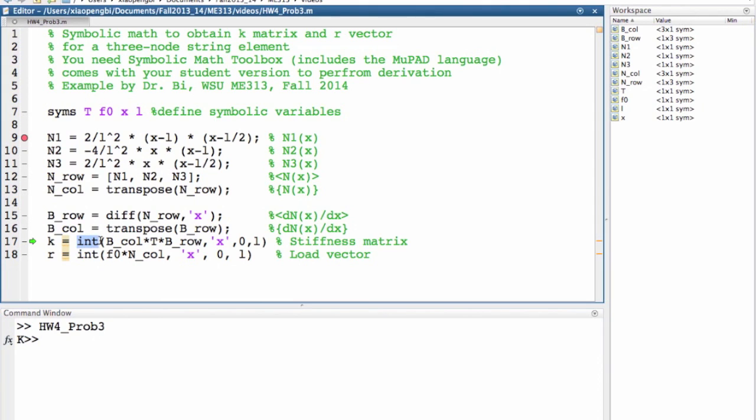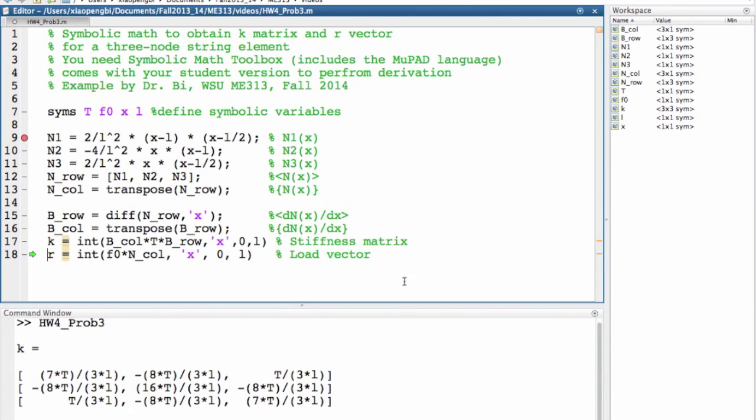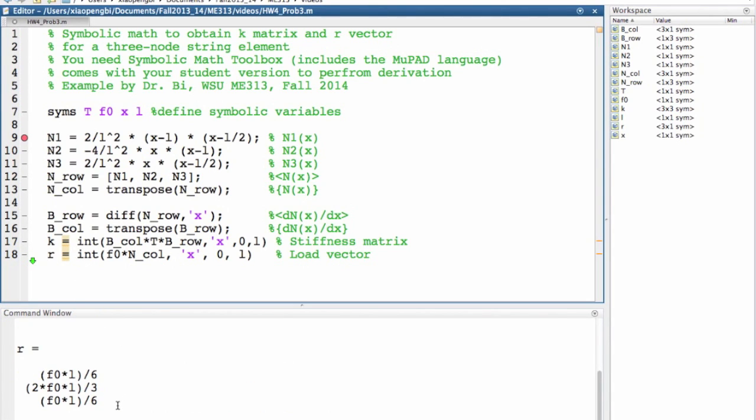Plug into equation number 1 and integrate from 0 to L to find local stiffness matrix K. Plug into equation number 2, integrate to find local load vector R.